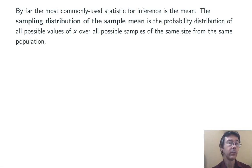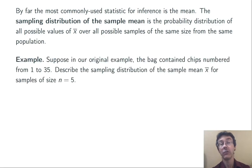By far, the most commonly used statistic for statistical inference is the mean. And so, you'll see the phrase, the sampling distribution of the sample mean, quite frequently. It's just the probability distribution of all the possible values that that sample mean can take over all possible samples of the same size from the same population.